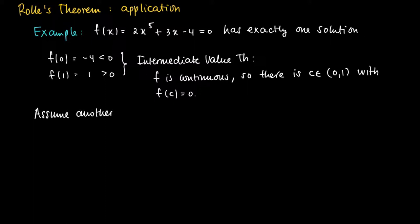So assume another solution b such that f(b) equals f(c) equals 0. So suppose we have at least two solutions, then we should be able to find a b different from c for which the function value equals 0 as well. So then we have the following picture. So in c and b we have the function value 0.